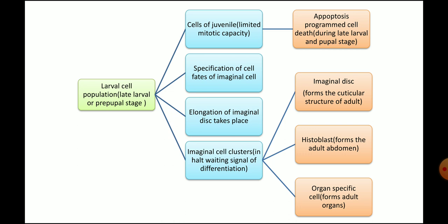Now let's see the developmental changes occurring during the late larval stages in detail. In the late larval stage of an insect, there are two populations of cells: one is the cells of the juvenile (larva), and the other is the imaginal cell clusters. The cells of the juvenile that will form the larval structures undergo programmed cell death or apoptosis during the late larval or prepupal stages, while the imaginal cell clusters begin to specify their positions and are divided into three zones: imaginal discs (which form cuticular structures of the adult), histoblasts (which will form the adult abdomen), and organ-specific cells (which will form the adult organs).